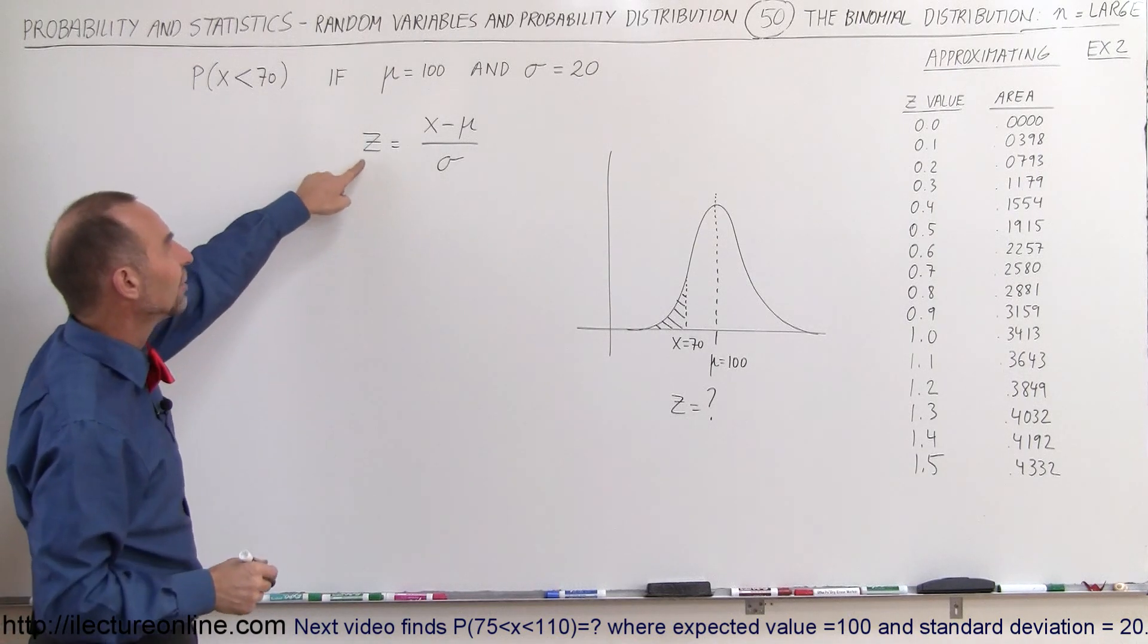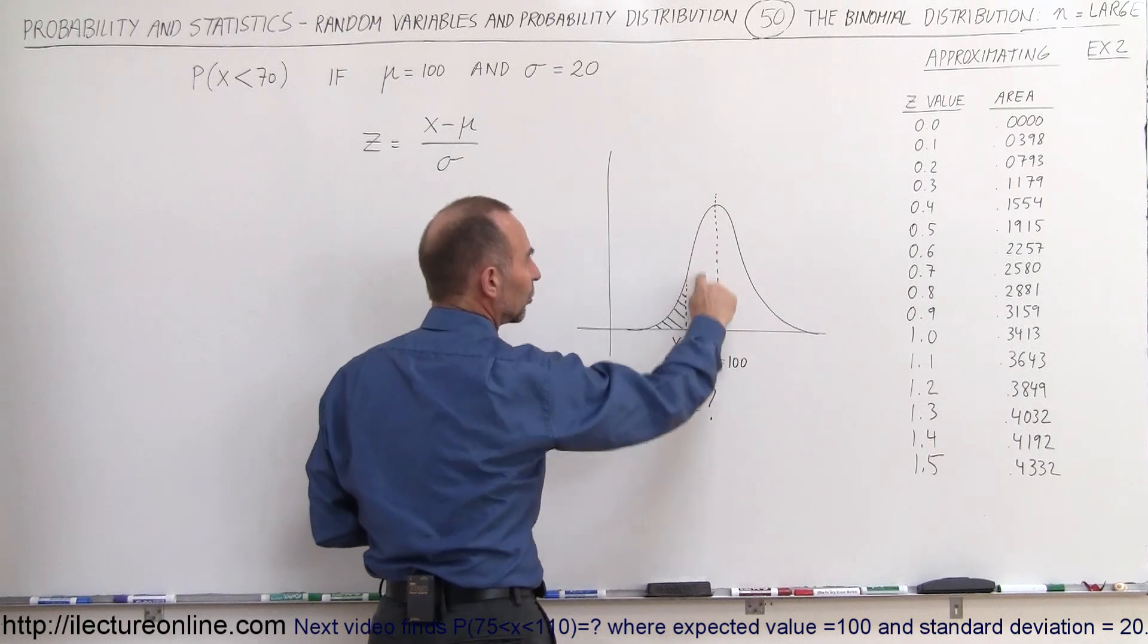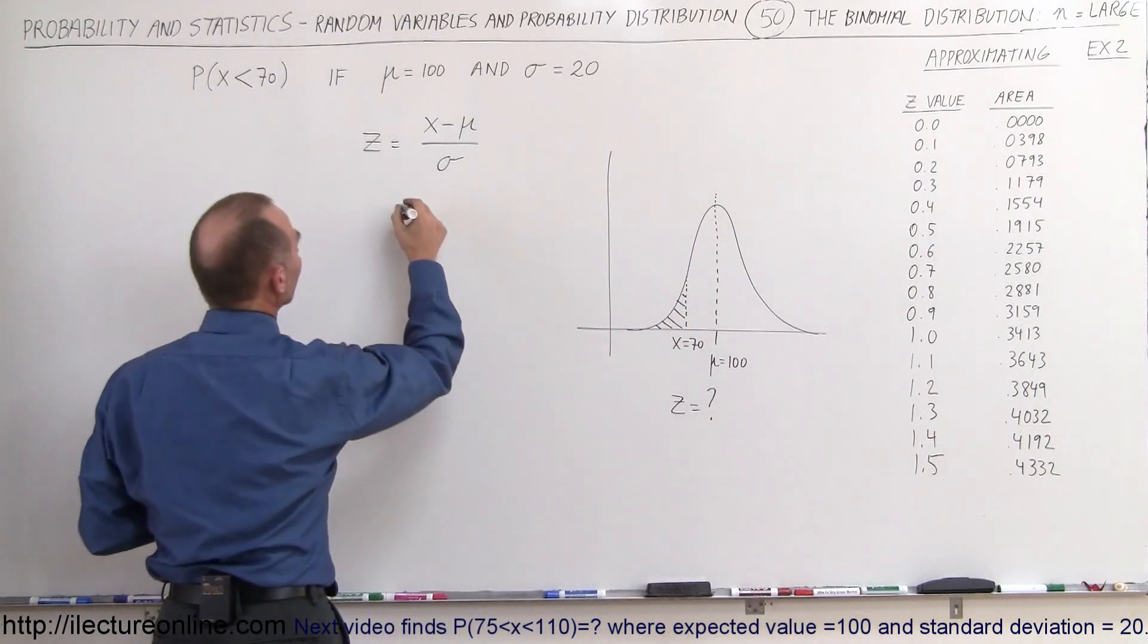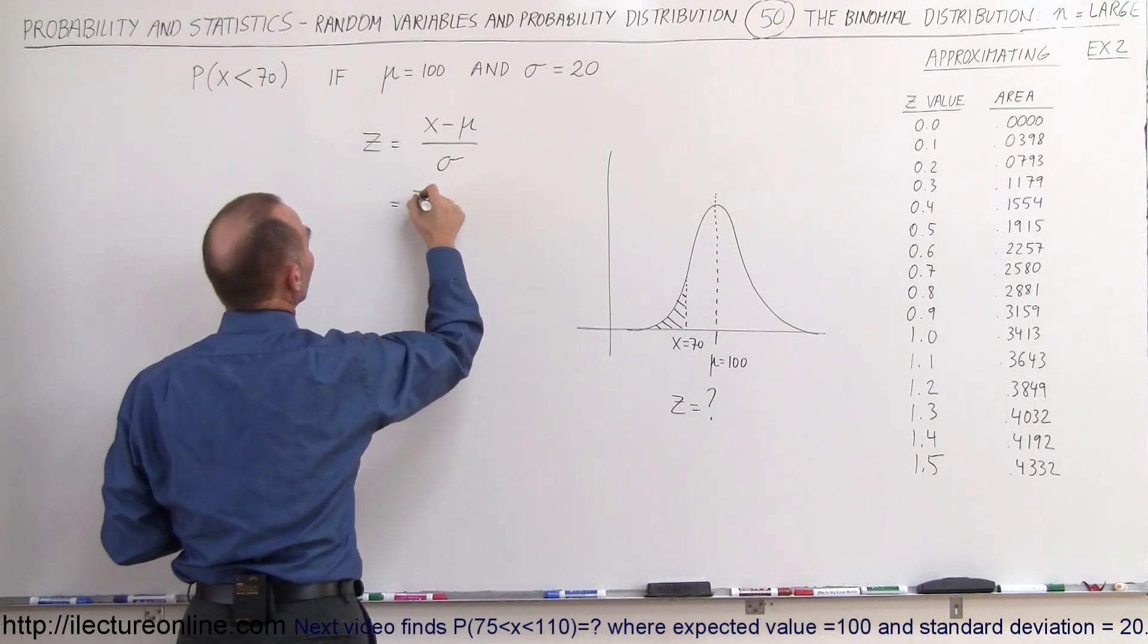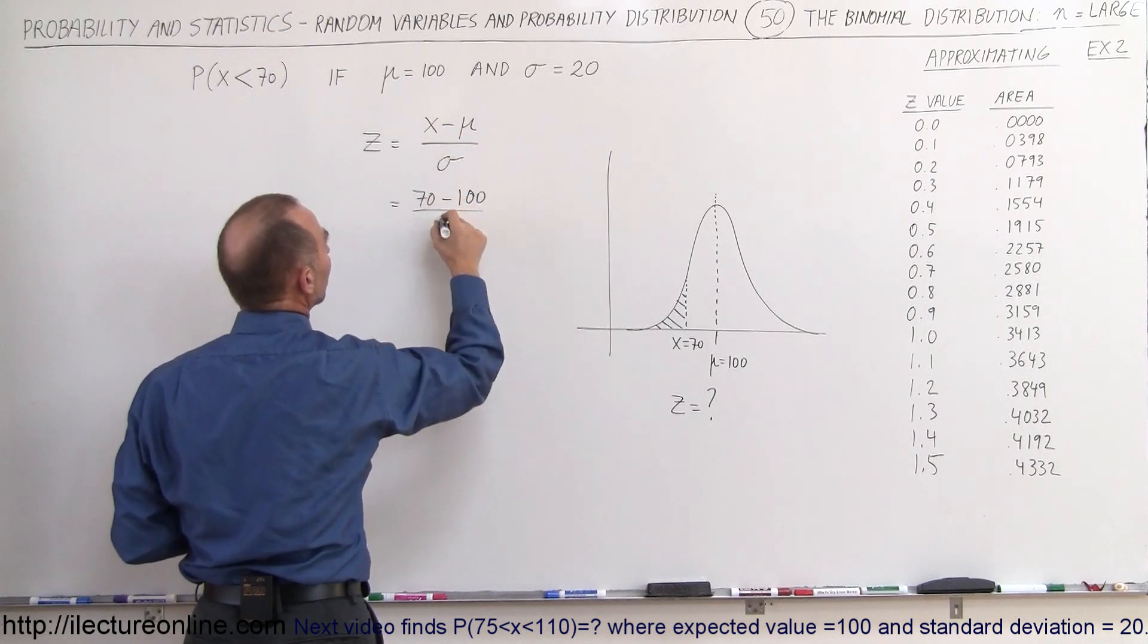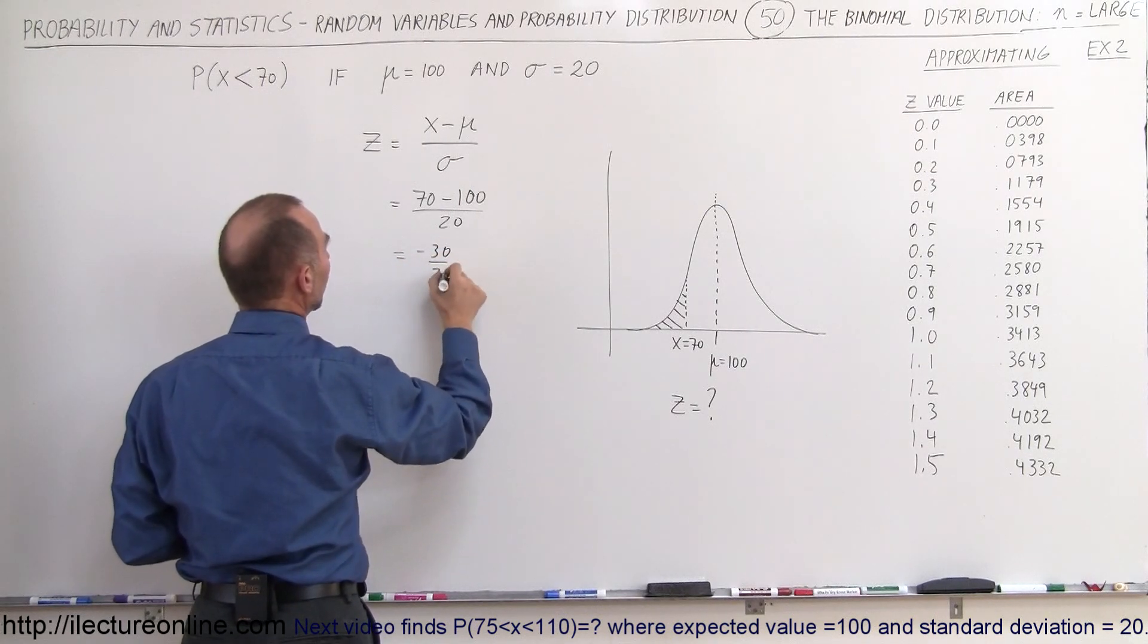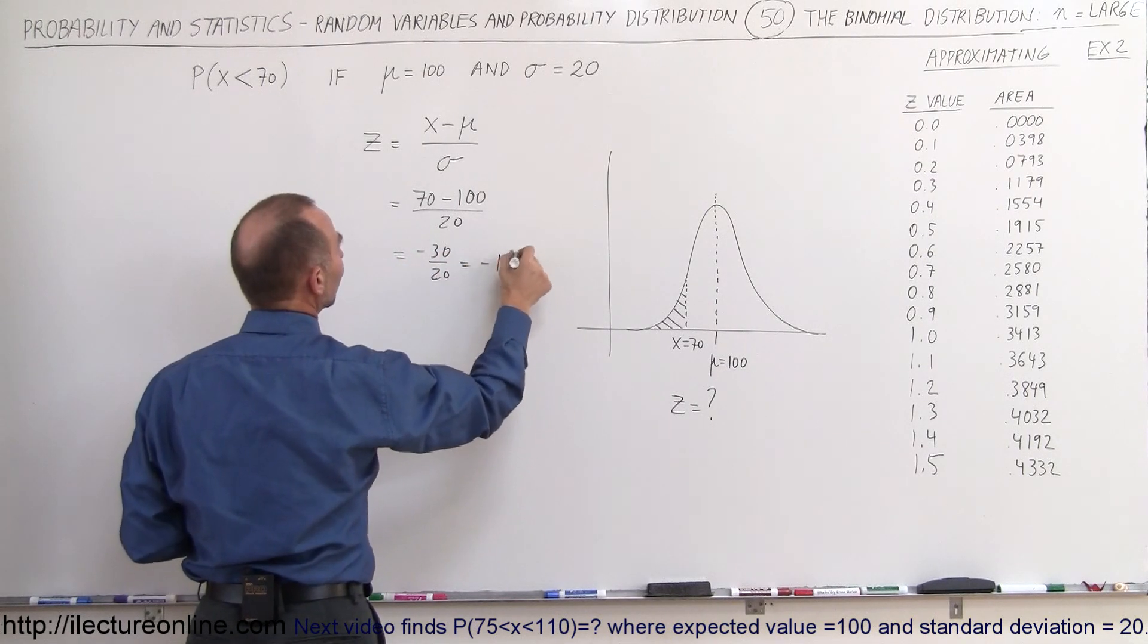First of all, we want to find the z value because the z value will help us figure out what this area is equal to right here. The z value is equal to x, which is 70, minus the expected value 100, divided by sigma, which is 20, the standard deviation. So this is equal to minus 30 divided by 20, which is equal to minus 1.5.